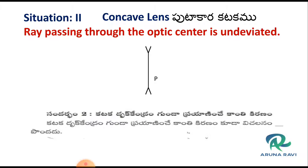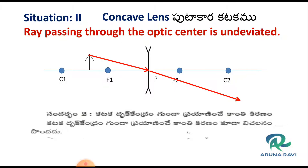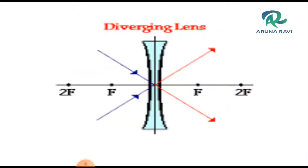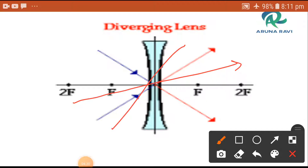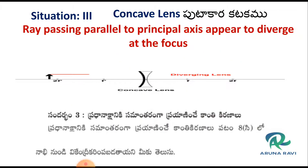Situation two: the ray passing through the optic center. Here you can see the concave lens with principal axis, F2, C2, F1, C1. You can observe the ray passing through the optic center — the ray passing through the optic center is undeviated.